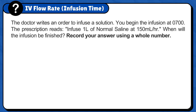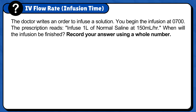The doctor writes an order to infuse a solution. You begin the infusion at 0700. The prescription reads: infuse 1 liter of normal saline at 150 ml per hour. When will the infusion be finished? Record your answer using a whole number.